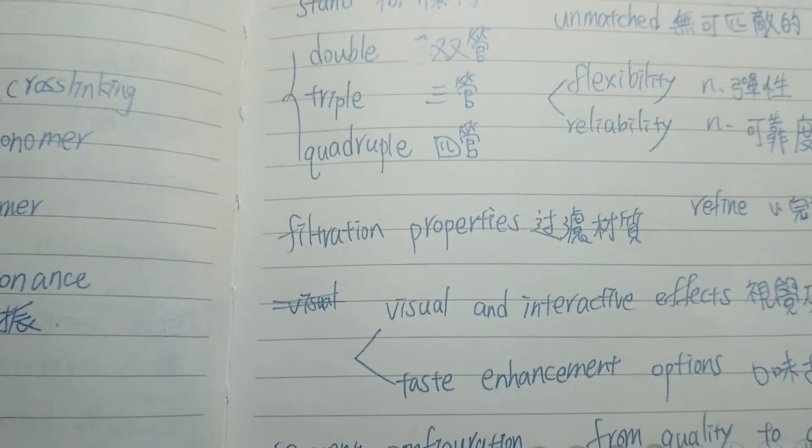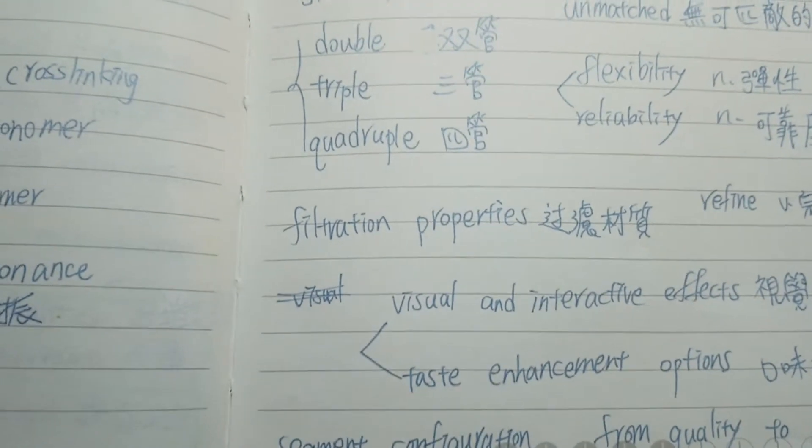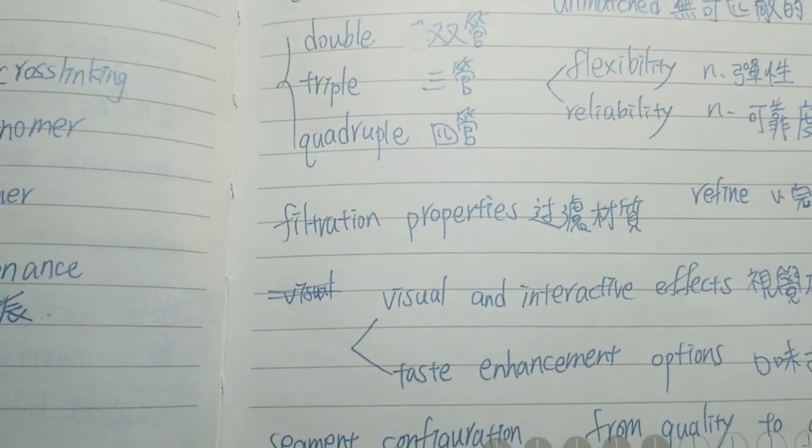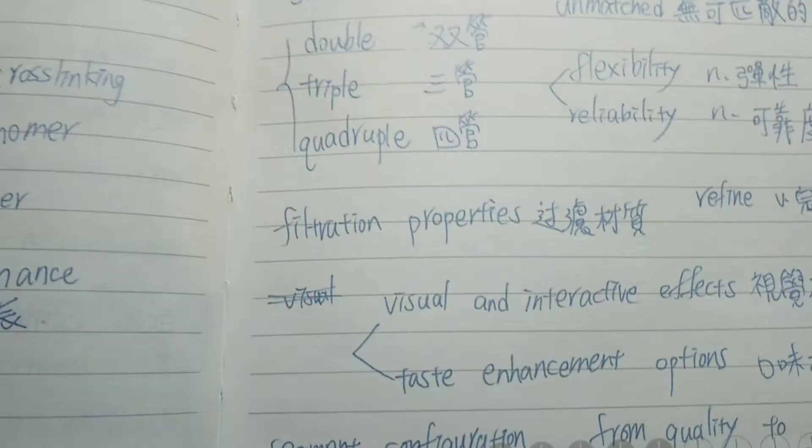Even the large range conversion which includes changing filter length and diameter, 这包含了要更改滤嘴的长度还有直径,以及segment configuration切面结构,it's done in a maximum of eight hours from quality to quality. 就是在最多八小时之内就能够完成,品质保证。